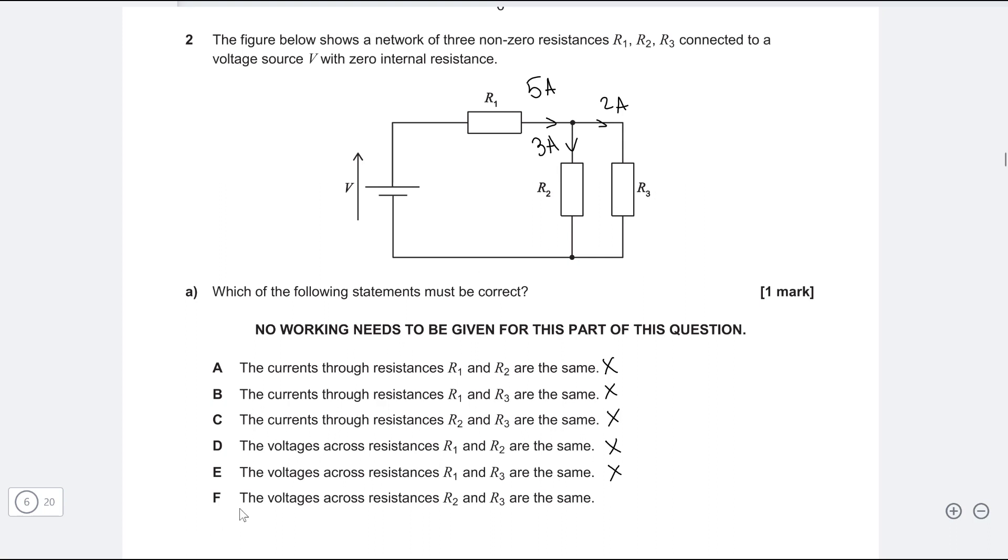Same as above, because the voltages across R2 and R3 will have to be the same by Kirchhoff's second law. Oh wait, have a look at part F. The voltages across resistance R2 and R3 are the same. That definitely has to be true because they are in parallel. So the correct answer is F.